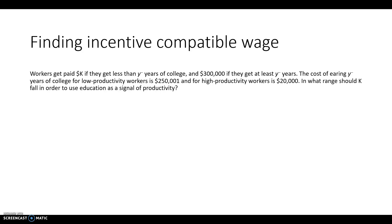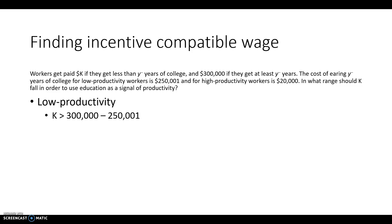For low productivity workers, you want to be sure they earn more if they don't go to college than if they do, so they have the incentive not to go to college. So you want K — the amount paid to workers who don't go to college — to be greater than what low productivity workers would get if they did go to college, which is $300,000 minus the $250,000 cost of college.